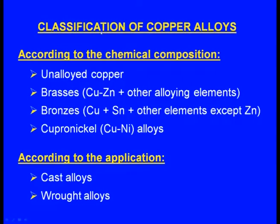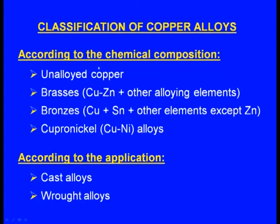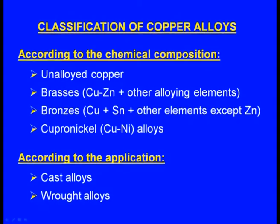Based on the objective or the purpose or the application, different alloying elements are added to the copper and the copper alloy is developed. The classification of copper alloys: first classification is according to the chemical composition and the second is according to the application. First, let us see the classification according to the chemical composition.